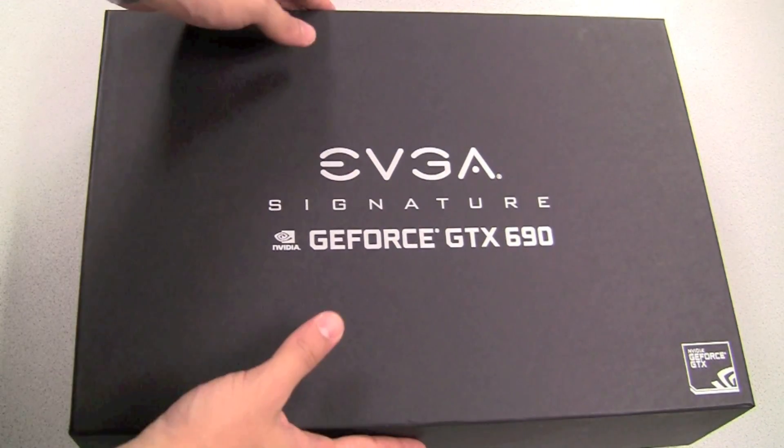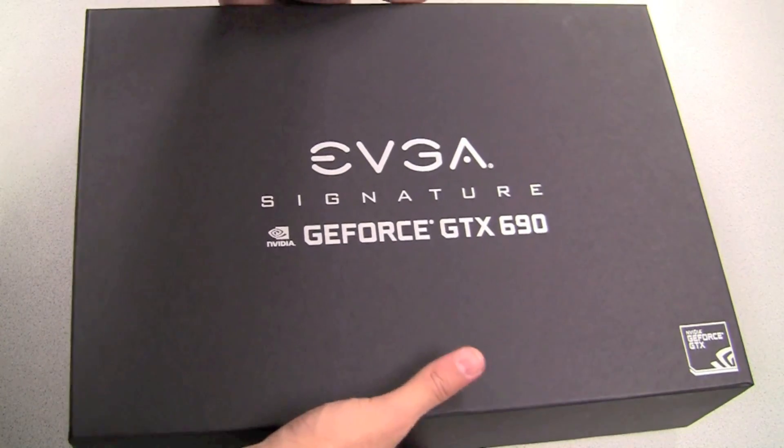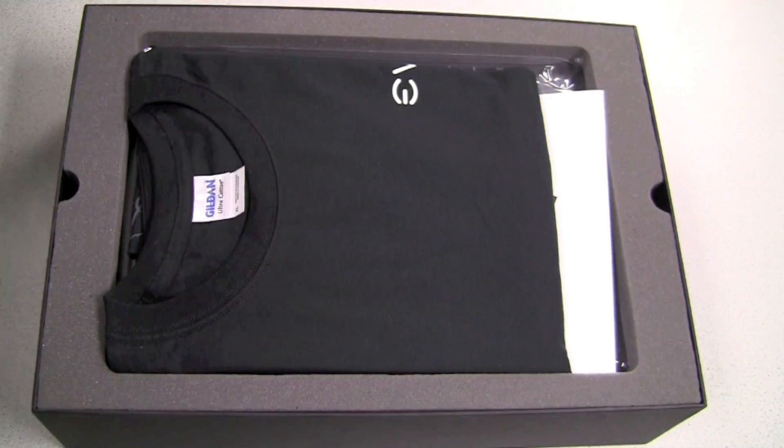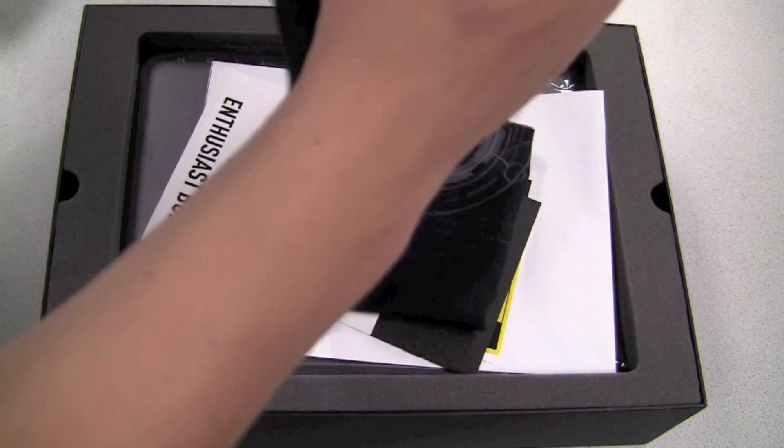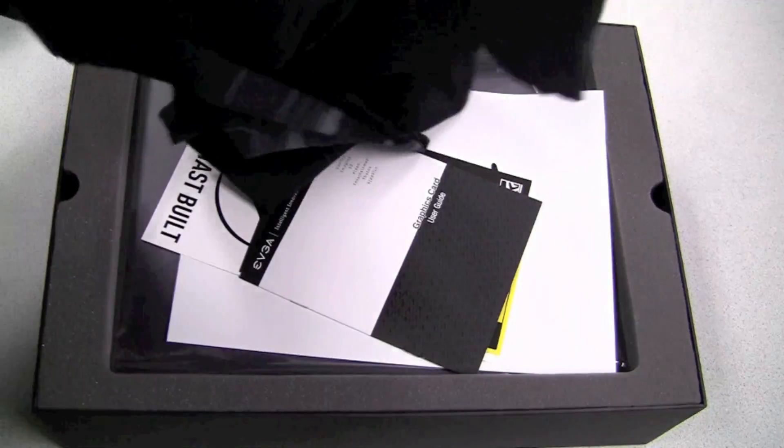So let's go ahead and open up the signature edition and see what we get on the inside. Once we pull off the top cover, the first thing we'll see here is that EVGA includes a special GTX 690 t-shirt.